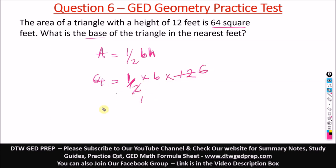To get b, we divide both sides by six. This would cancel, we're left with b here, and 64 divided by six we'll get 10.66. So b equals 10.66, but here it says to the nearest feet.